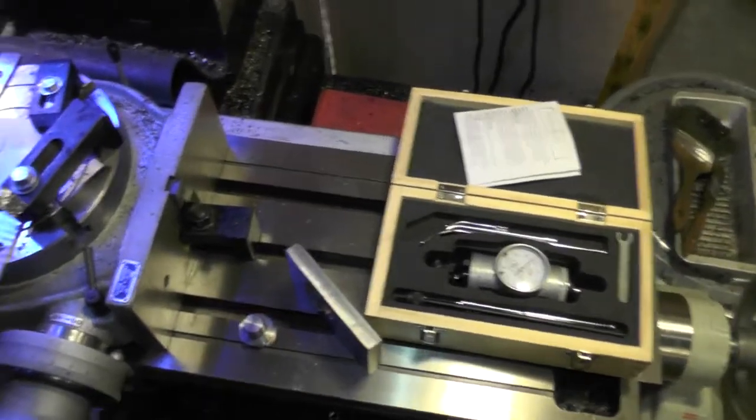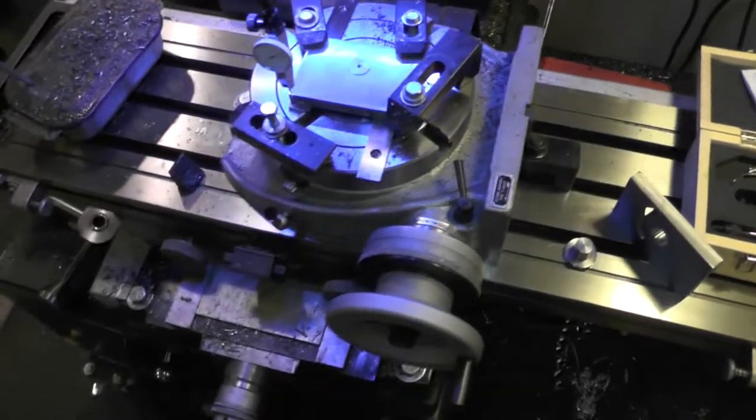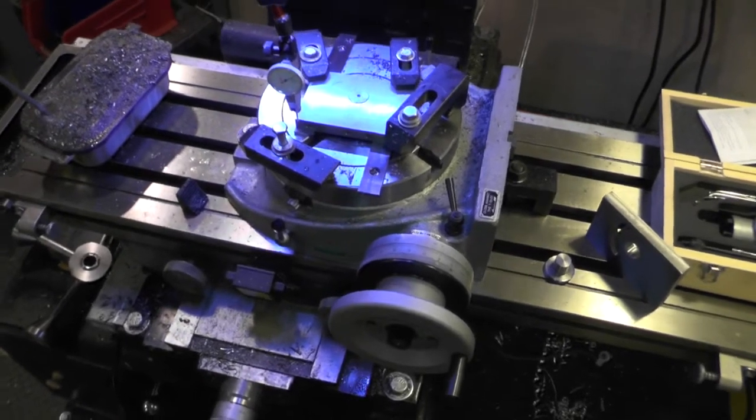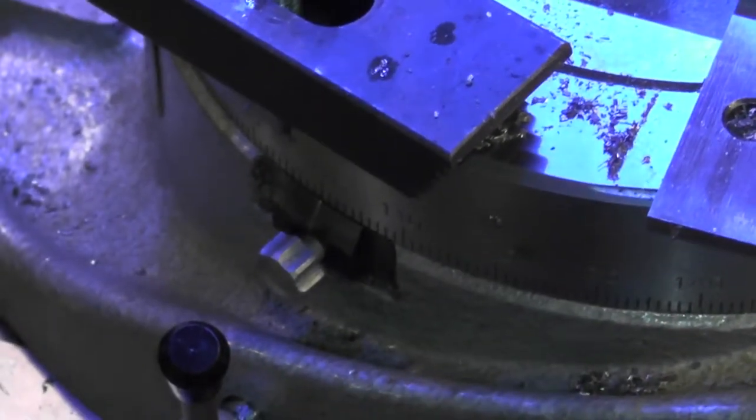I made the plug to fit into there nice and snug. Once I got the rotary table all mounted in and indicated in, I set the vernier on the side of it to 100 degrees.